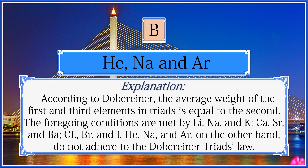The answer is helium, sodium, and argon. According to Dobereiner, the average weight of the first and third elements in the triads is equal to the second. The foregoing conditions are met by lithium, sodium, and potassium; calcium, strontium, and barium; and chlorine, bromine, and iodine. Helium, sodium, and argon do not adhere to the Dobereiner triad law.